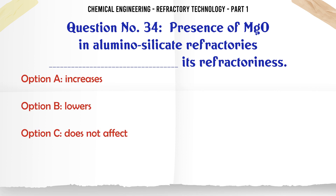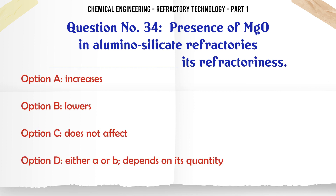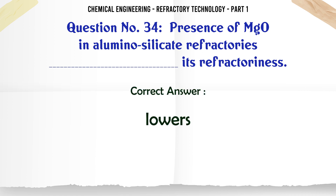Presence of MgO in aluminosilicate refractories ___ its refractoriness. A. Increases, B. Lowers, C. Does not affect, D. Either A or B, depends on its quantity. The correct answer is Lowers.